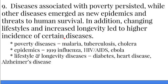Let's talk about diseases. We have two major categories. First, poverty diseases — things like malaria, cholera, and tuberculosis. Many of these diseases are treatable and preventable, but because poorer parts of the world like Latin America, sub-Saharan Africa, India, China, and Southeast Asia lack the resources to prevent them, these diseases affect a lot of the poorer populations of the world.